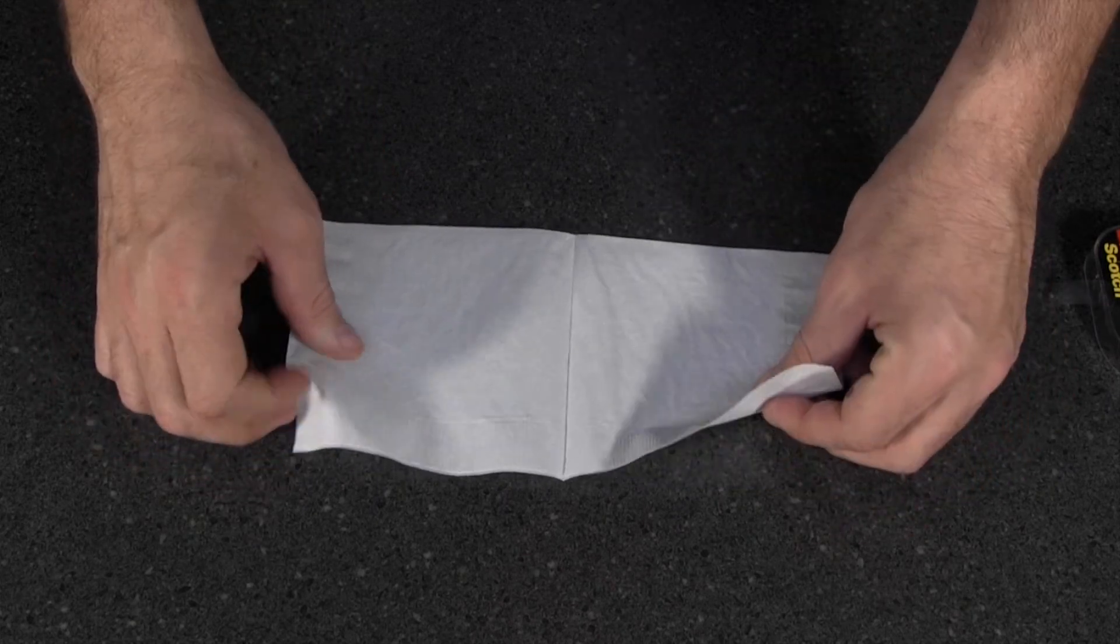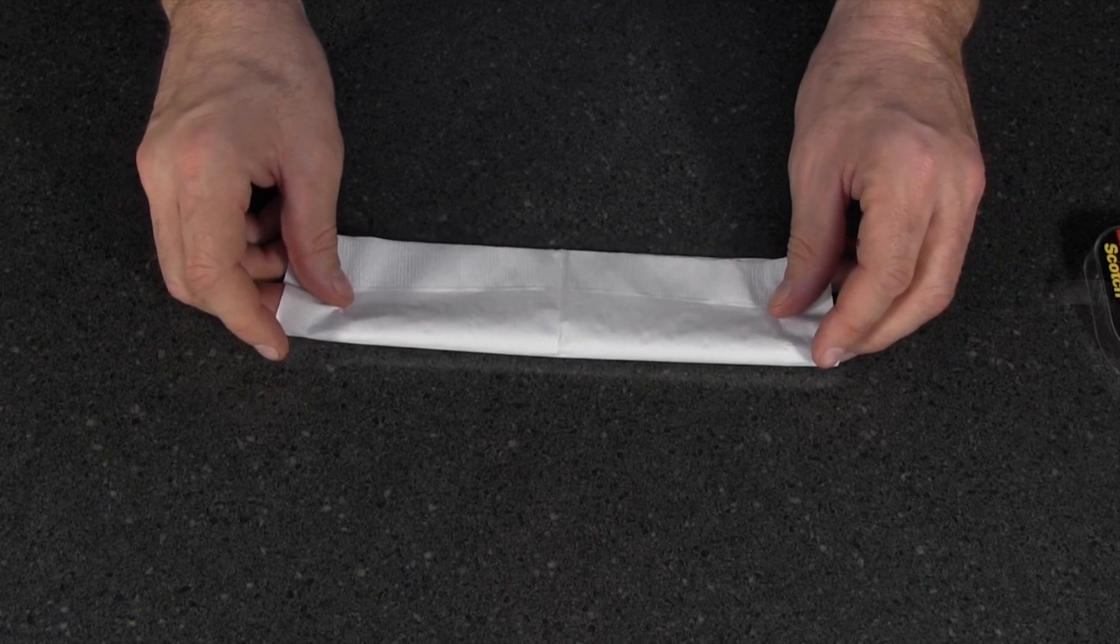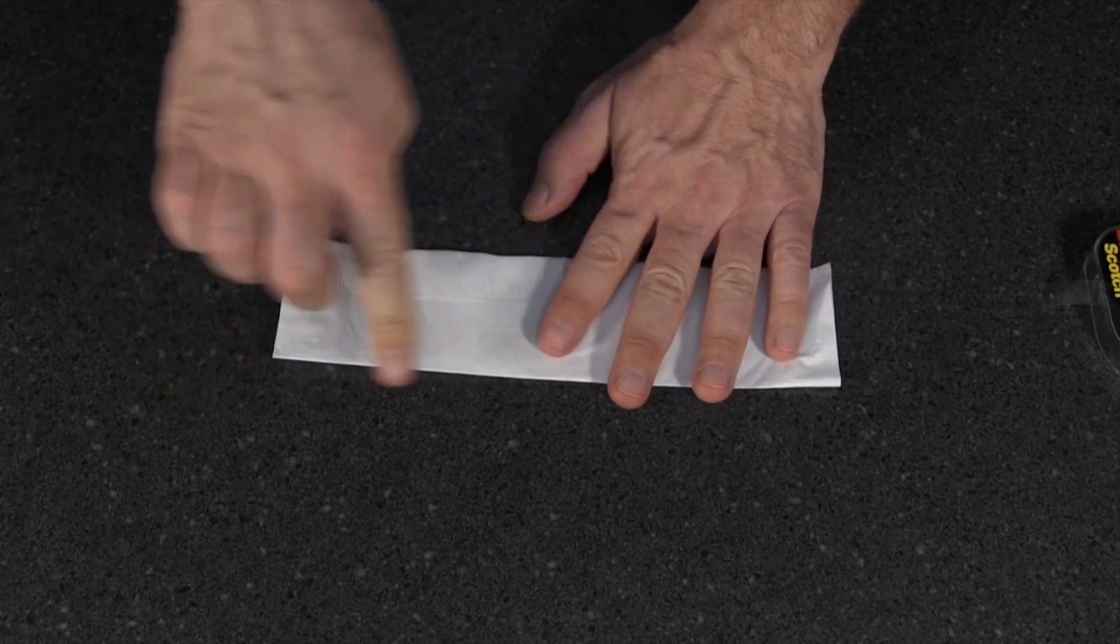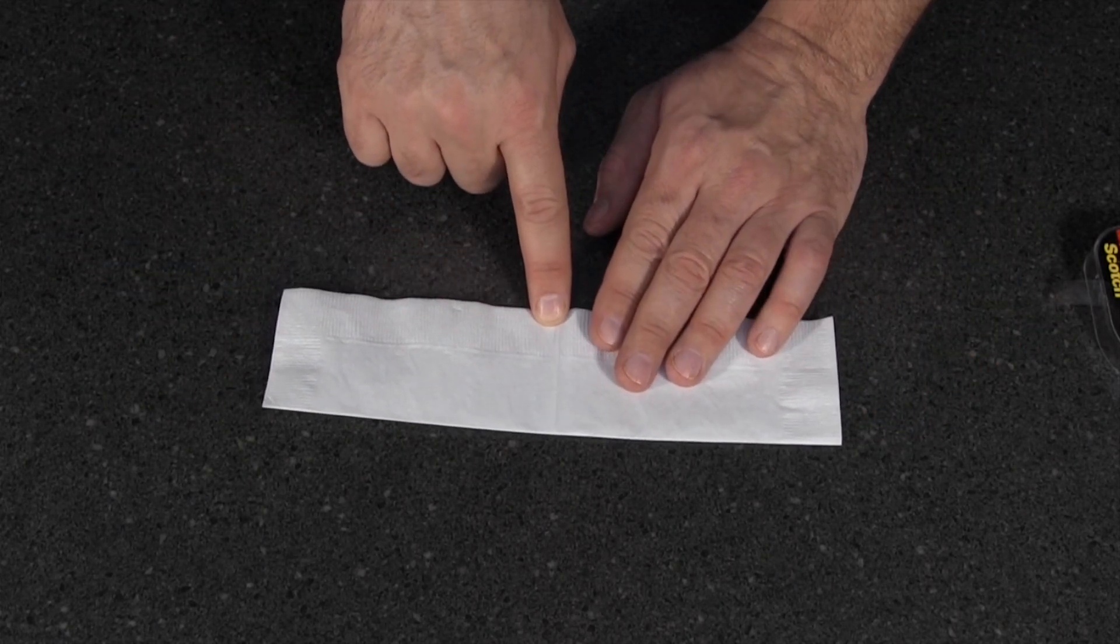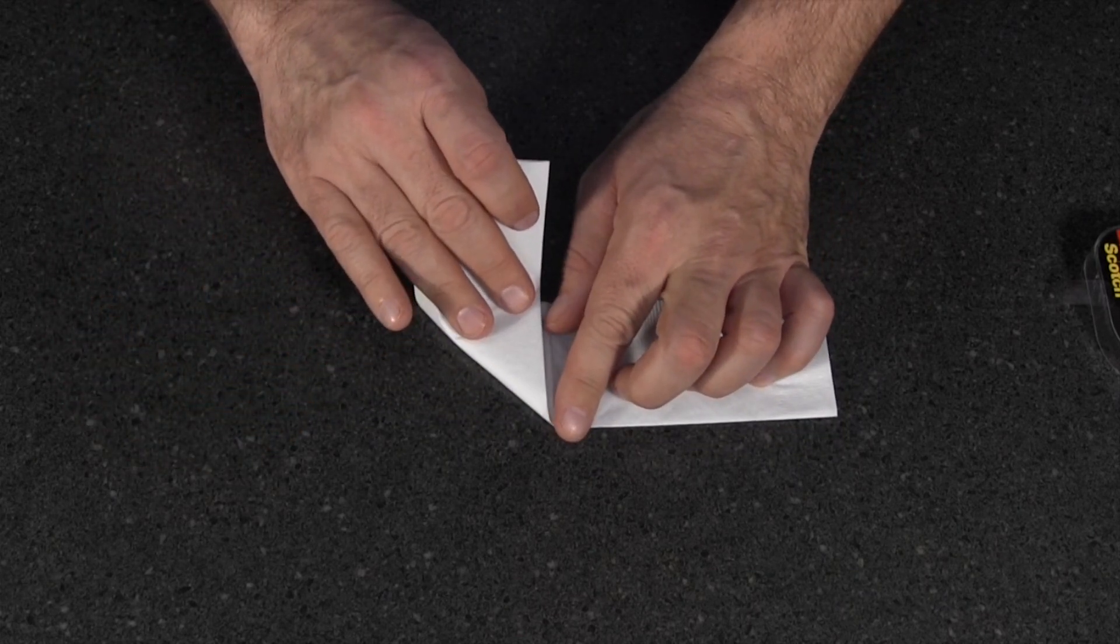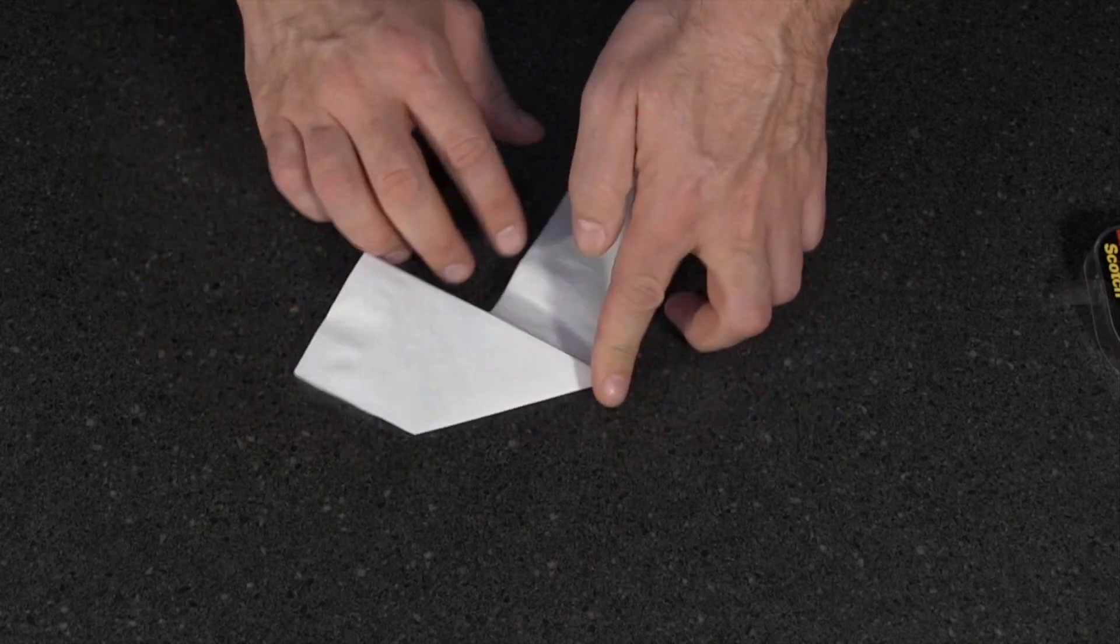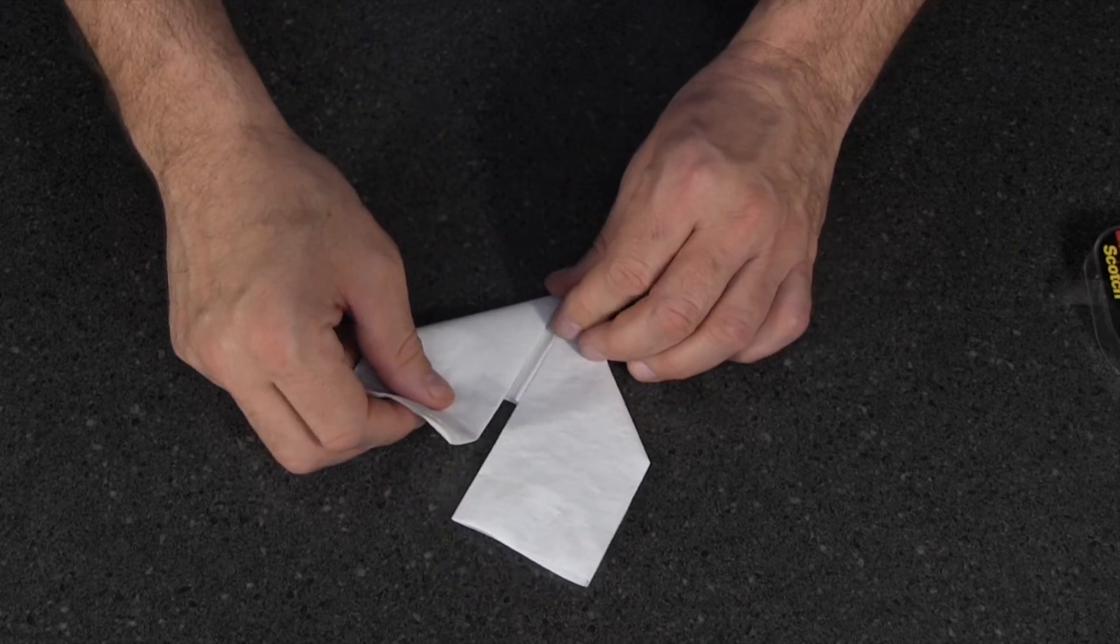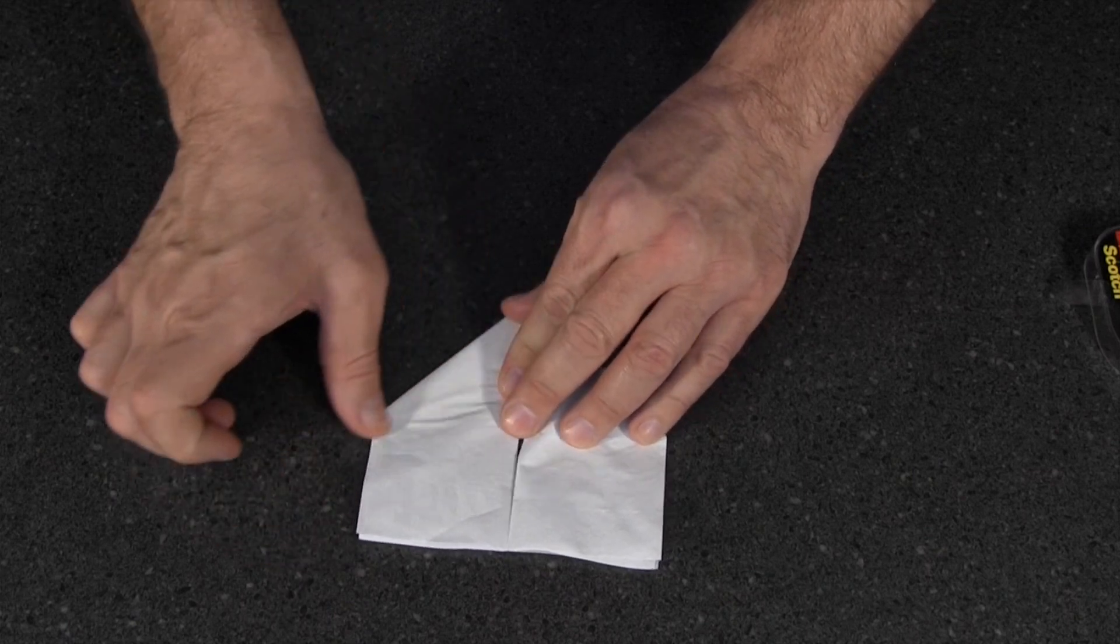Now you're going to take your napkin and fold that in half like this, and give that a crease. Then you've got a nice line here that shows you where the center is, so you're going to fold right on that line and fold this to a point here. Give that a crease, and do the same thing with this side. And give that a crease.